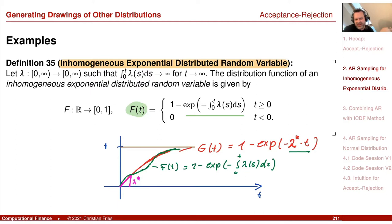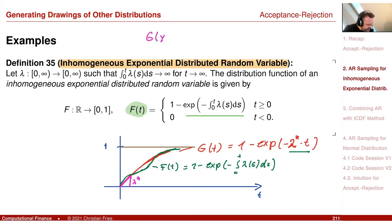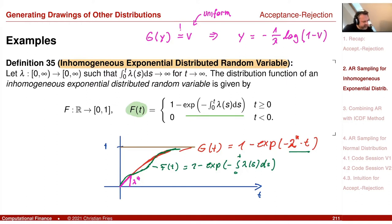In that case, we may use acceptance-rejection to generate f by using the distribution function g, which is just our plain exponential distribution that we can invert. We can generate the sequence y: if G(y) = v where v is uniform, then y equals minus 1/lambda times log(1 minus v). That was just the inversion of the distribution function for the exponential distribution.